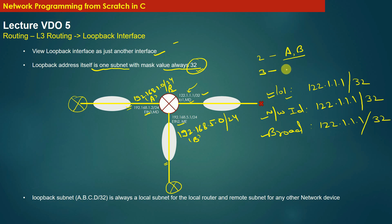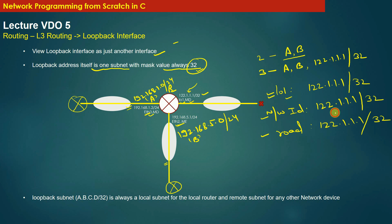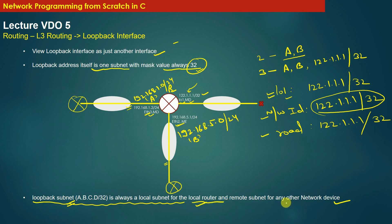The answer is three: subnet A, subnet B, and 122.1.1.1/32 — because router R has three local interfaces: Ethernet 3, Ethernet 2, and loopback LO1. If you create another loopback interface, the number of local subnets becomes four. Loopback subnets are always local subnets for the local router, and always remote subnets for any other network device in the topology.